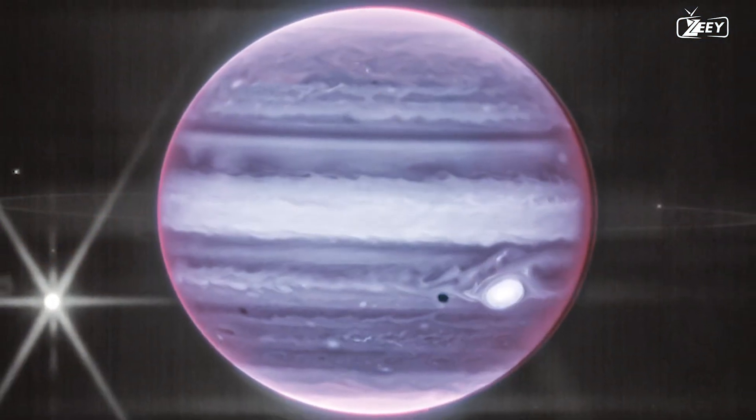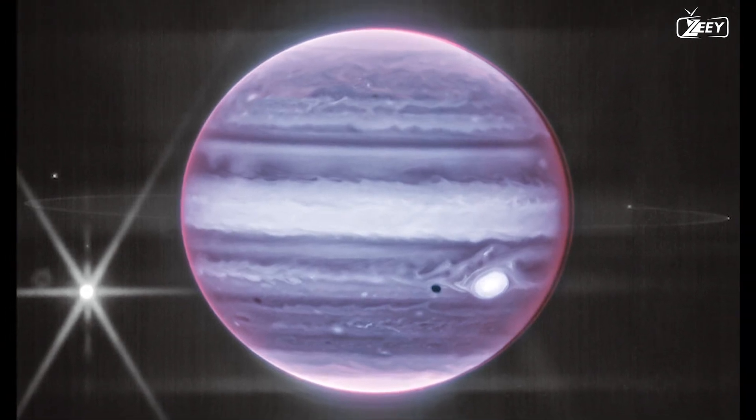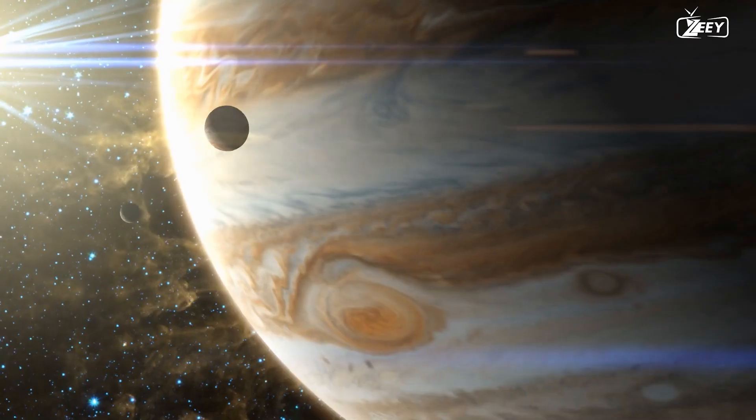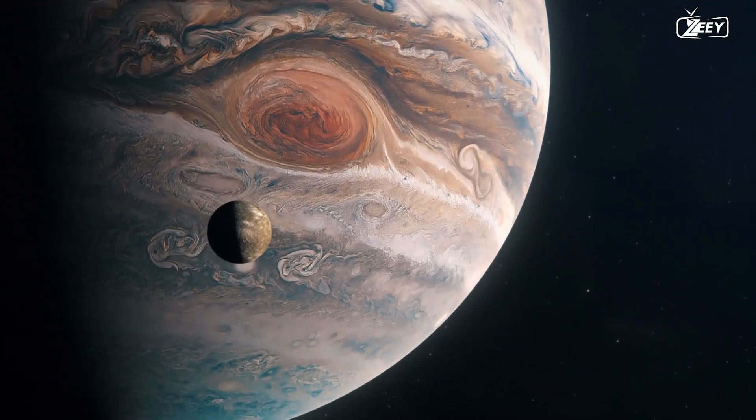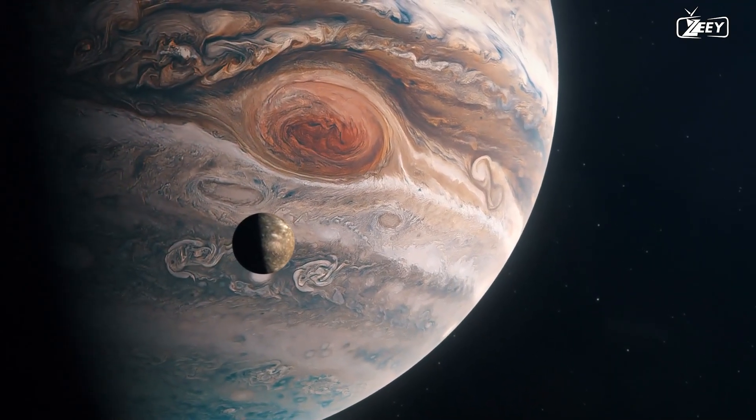Within these detailed images, Voyager 1 stunned everyone by revealing a thin ring surrounding the planet as well as two moons, Thebes and Métis. It also disclosed that Jupiter's moons were active worlds.